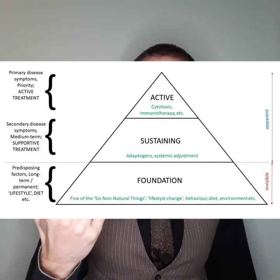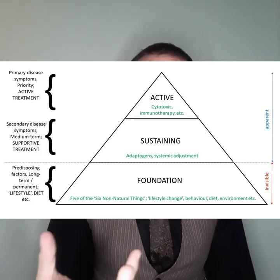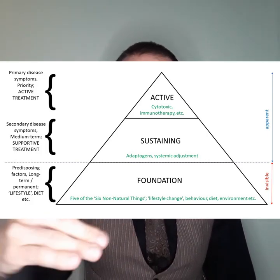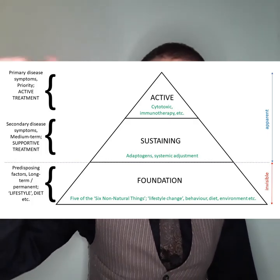We can look at this pyramid in various ways. The priority is obviously the sharp, pointy end at the top — you want to get in there with active treatment first, then secondarily introduce the sustaining layer to support you through treatment and enhance the fitness of the body, and then as a third priority get in with the foundational stuff. The foundation is the broadest layer, and its width tells you it is the most important layer for long-term prognosis, even though it's the lowest acute priority.